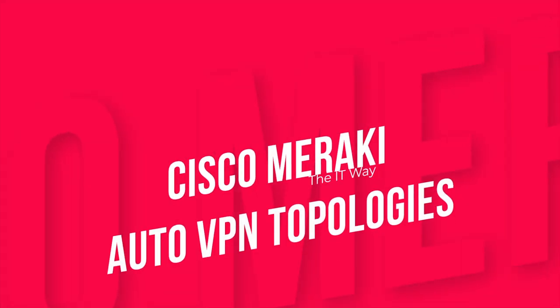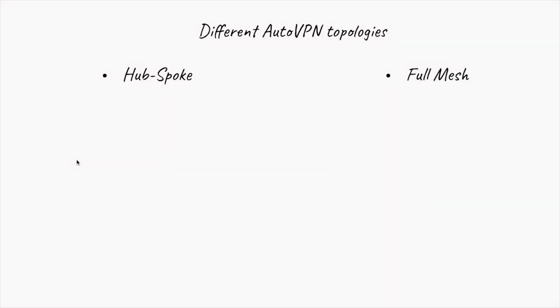Now let's talk about the different AutoVPN topologies. Mainly you have two different fundamental topologies that you can use in AutoVPN or probably in any other VPN technology. The hub-spoke topology and the full mesh topology.